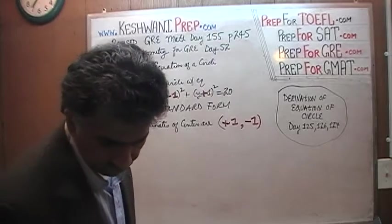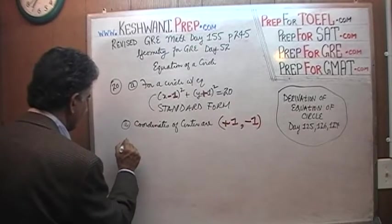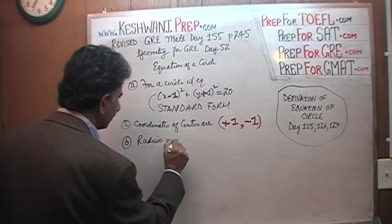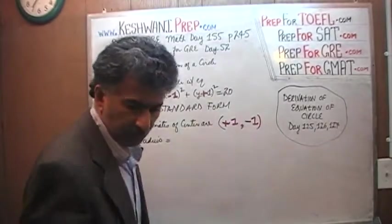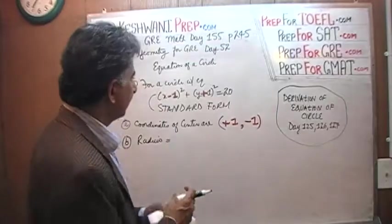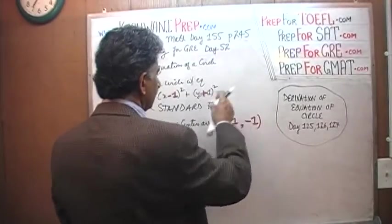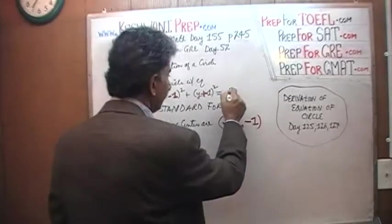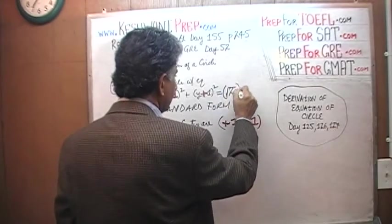The next question they ask you is the radius of the circle. The radius of the circle is whatever quantity that you see there being squared. Here we see 20.